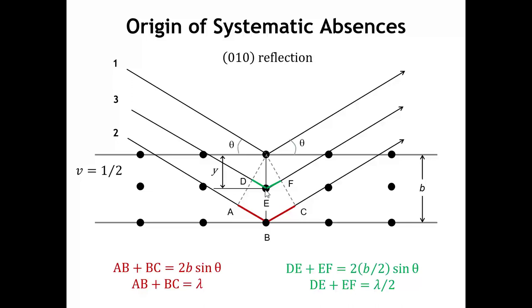That means the path length difference is one half wavelength. If you take two waves and they're off by half a wavelength, that is a π phase shift — 180 degrees out of phase — and they're going to completely destructively interfere. So we can see why the 0, 1, 0 peak would have an intensity of zero. It doesn't really matter where these atoms are in the x, z plane; the only criterion is that the intermediate plane of atoms is halfway between the top and bottom planes.